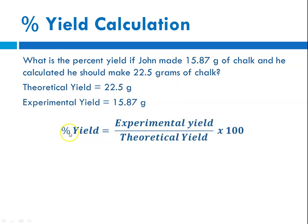Here comes the equation, percent yield equals experimental divided by theoretical times 100. Now we're going to plug in the numbers, 15.87 experimental divided by 22.5 theoretical times 100. You get 70.5333333 percent.